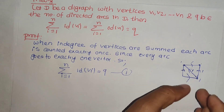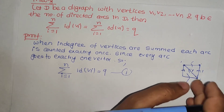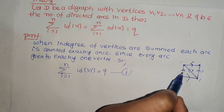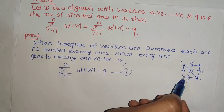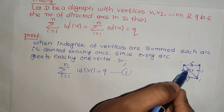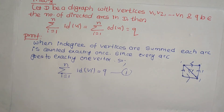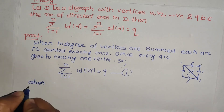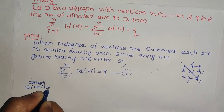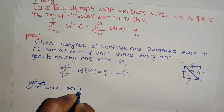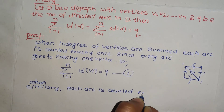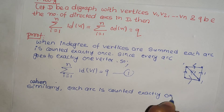When you count the number of edges, you count only in the number of edges, and then exactly once. If you count this number of edges, you count every edge and you count every degree. Out-degree is counted exactly once. Similarly, each arc is counted exactly once.